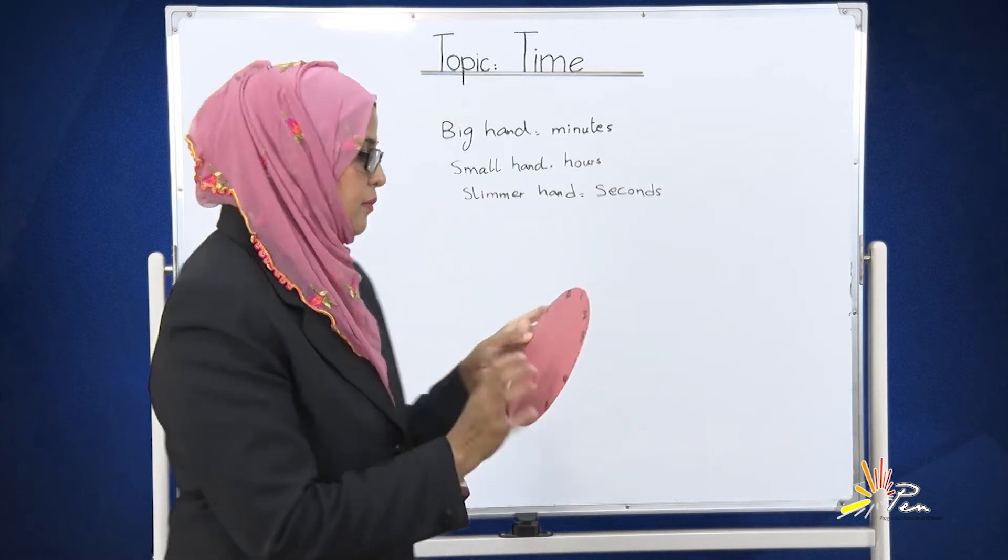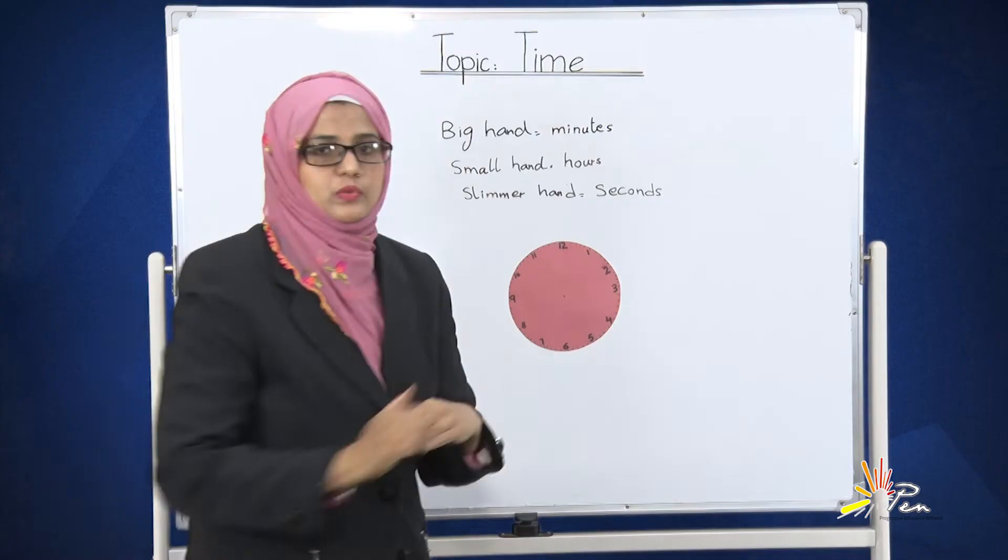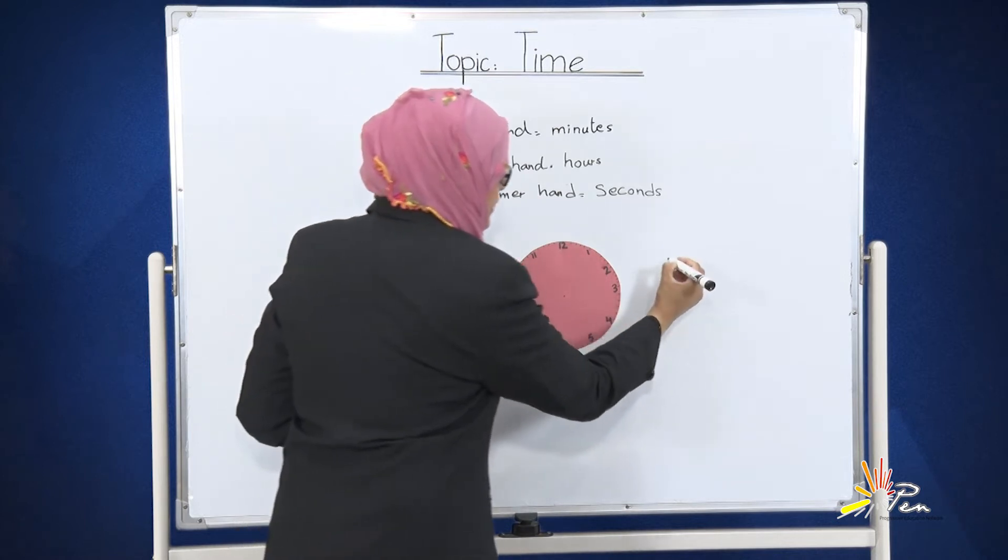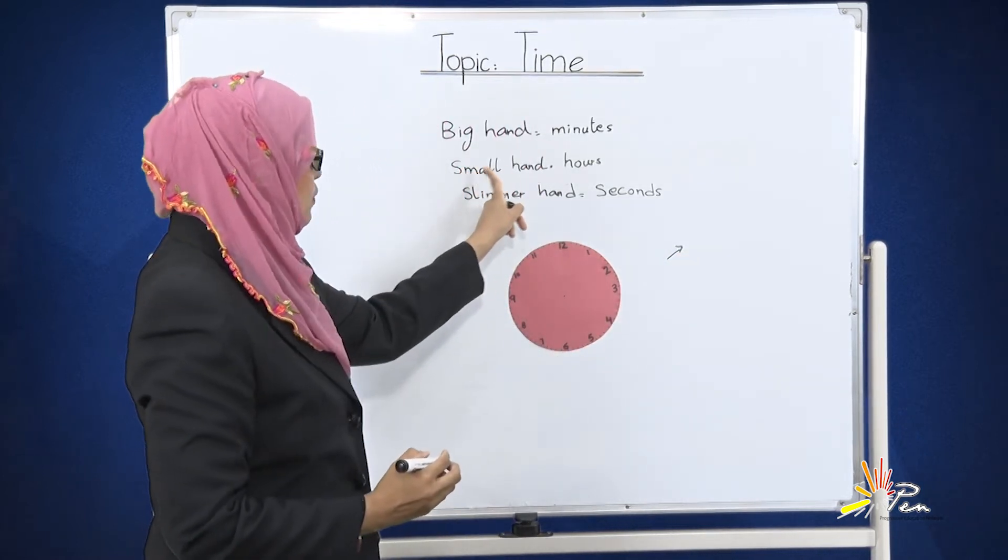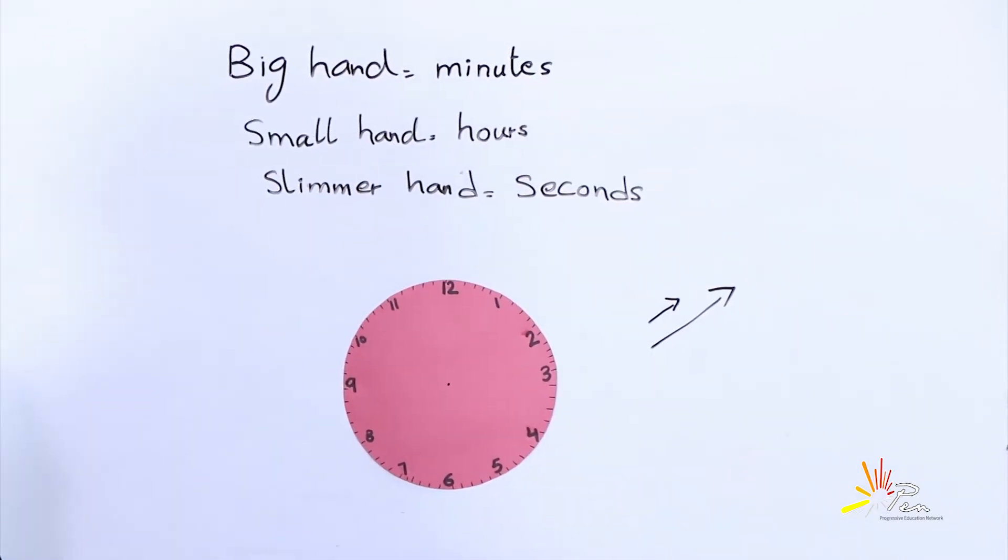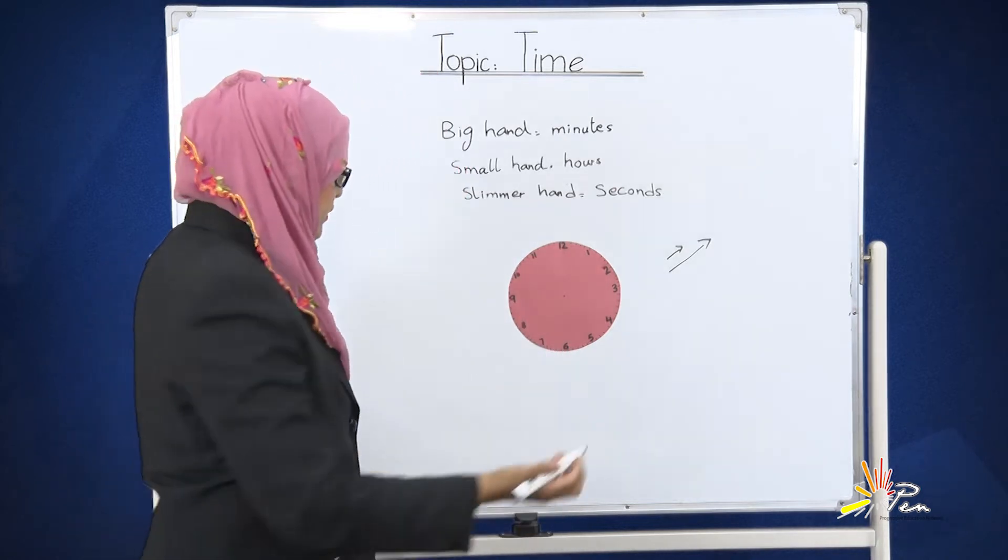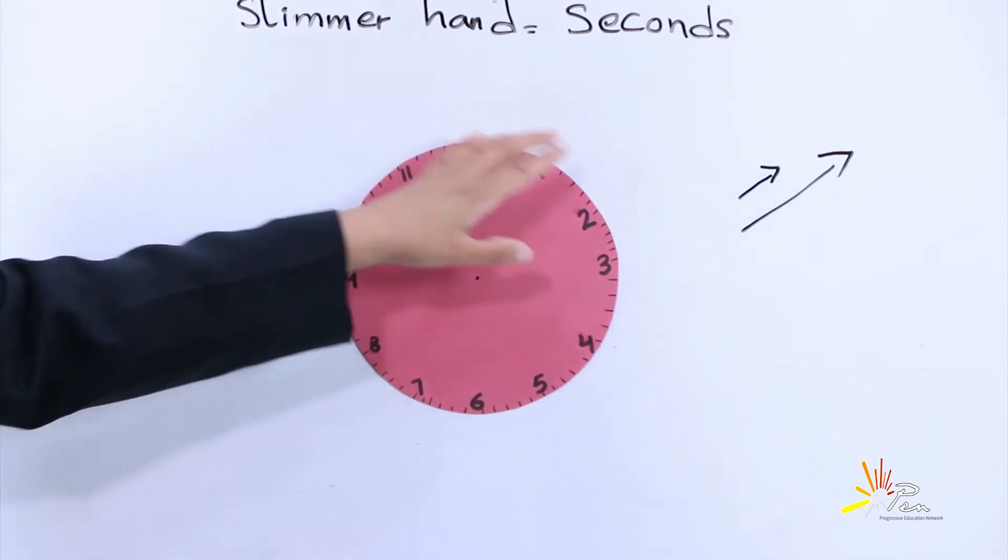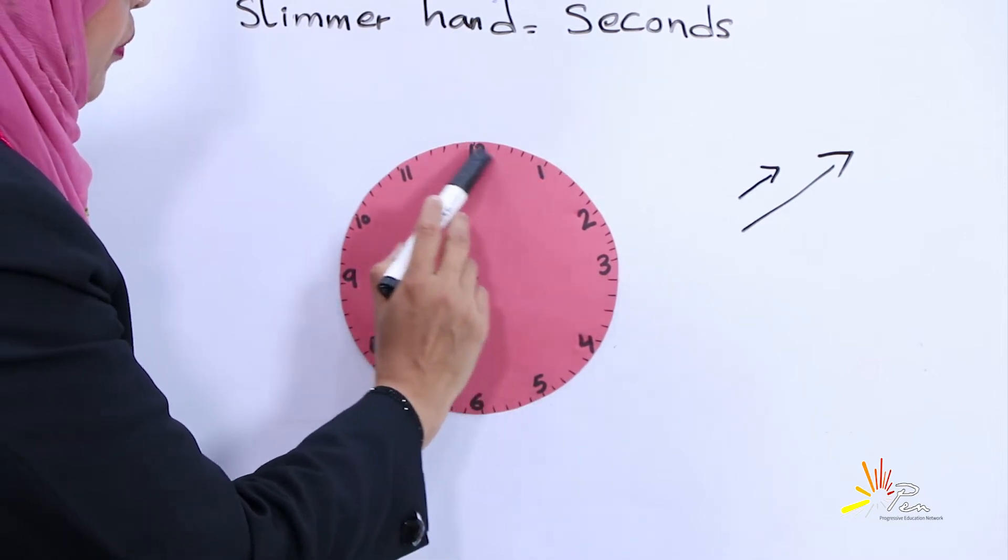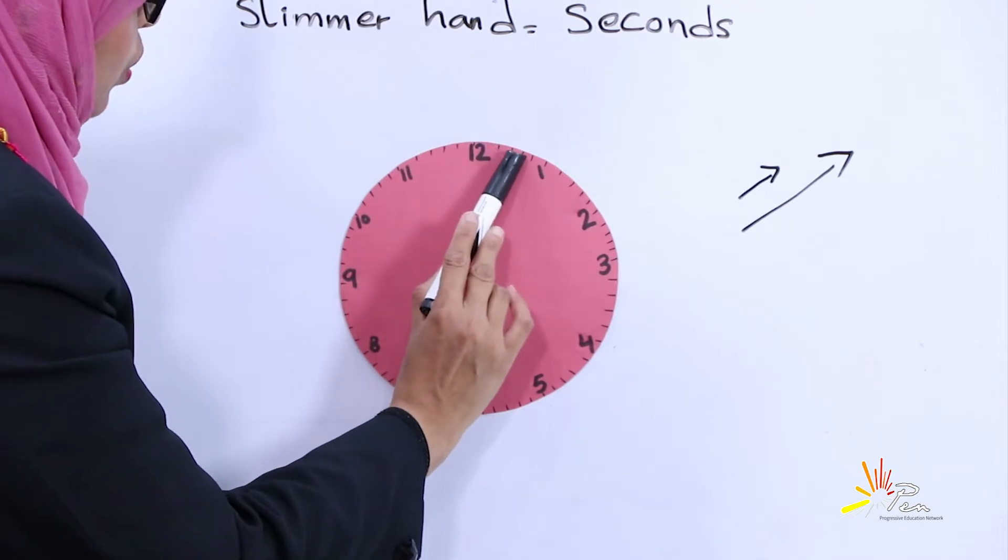Now here I have another clock in my hand for you, and I'm pasting it on the board. We will learn how we can see the time. The smaller hand shows the hours and the bigger hand shows the minutes. The bigger hand moves according to the table of five. I told you that this clock is divided into 60 equal parts.